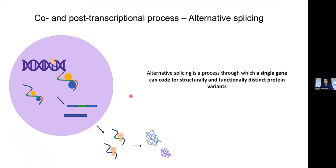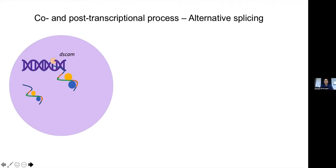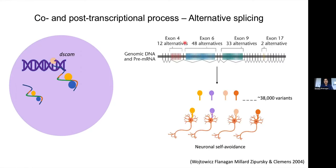Alternative splicing is a co- and post-transcriptional process through which a single gene can code for structurally and functionally distinct protein variants. An example of this is the DS-CAM gene in Drosophila — the Down syndrome cell adhesion molecule — which has four clusters of alternate exons, with mostly one exon retained from each cluster, leading to approximately 38,000 different variants. Many of these variants code for different proteins expressed on neuron cell surfaces, involved in neuronal self-avoidance, which is crucial during development.